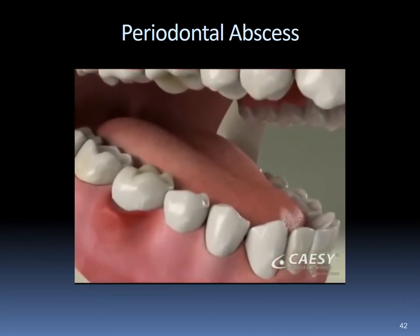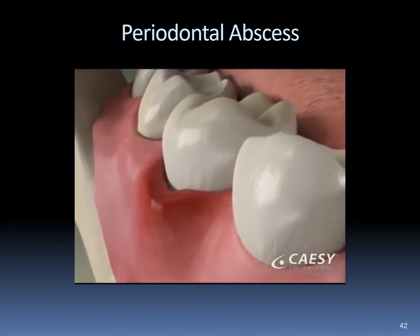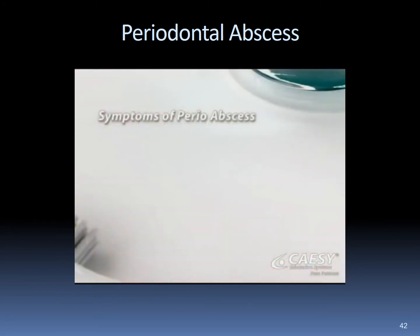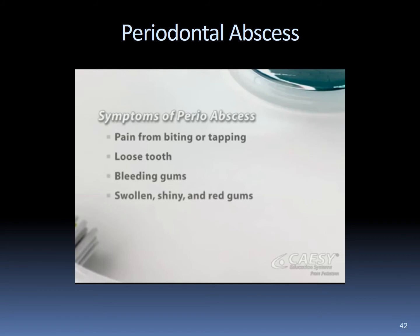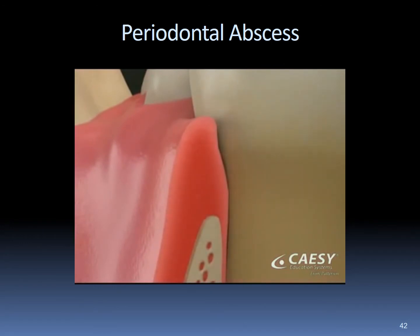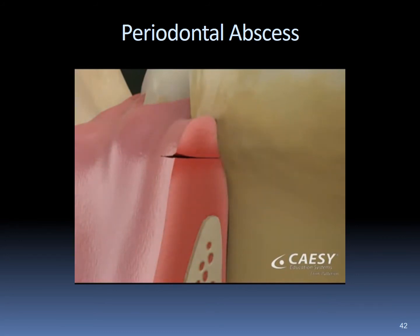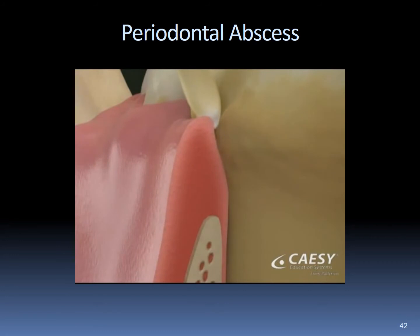A periodontal abscess is a pocket of pus that typically forms in the space between the gums and the tooth, called the sulcus. Signs include tooth pain when tapping or biting, slight looseness, bleeding gums that are swollen, shiny, and red or deep red-blue — though you may have none of these symptoms. Many cases are caused when periodontal infection flares up in a gum pocket and grows quickly. Injured gums can form an abscess when infected by bacteria, especially when already affected by periodontal disease. Impacted food such as a seed or popcorn shell can cause an abscess by preventing natural fluid from flushing bacteria and providing fuel for bacterial growth.